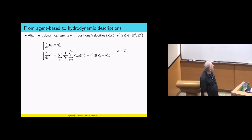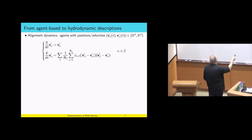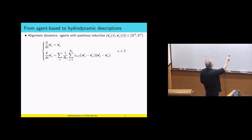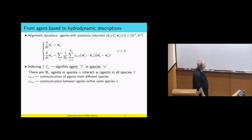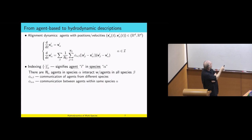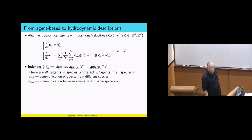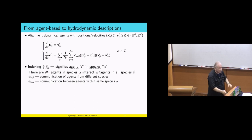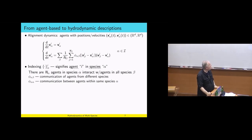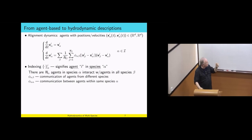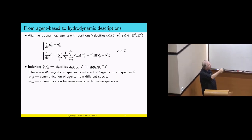If we want to go from the hydrodynamics back to the agent-based description, looking from above it's easy to see: you get agent i in flock or species alpha, and it interacts with all other species indexed by beta, and with agent j at position xj. There are N alpha agents in each species alpha, and they interact with the other species with different communications. Different crowds have different rules of interaction, encoded in terms of phi alpha beta.